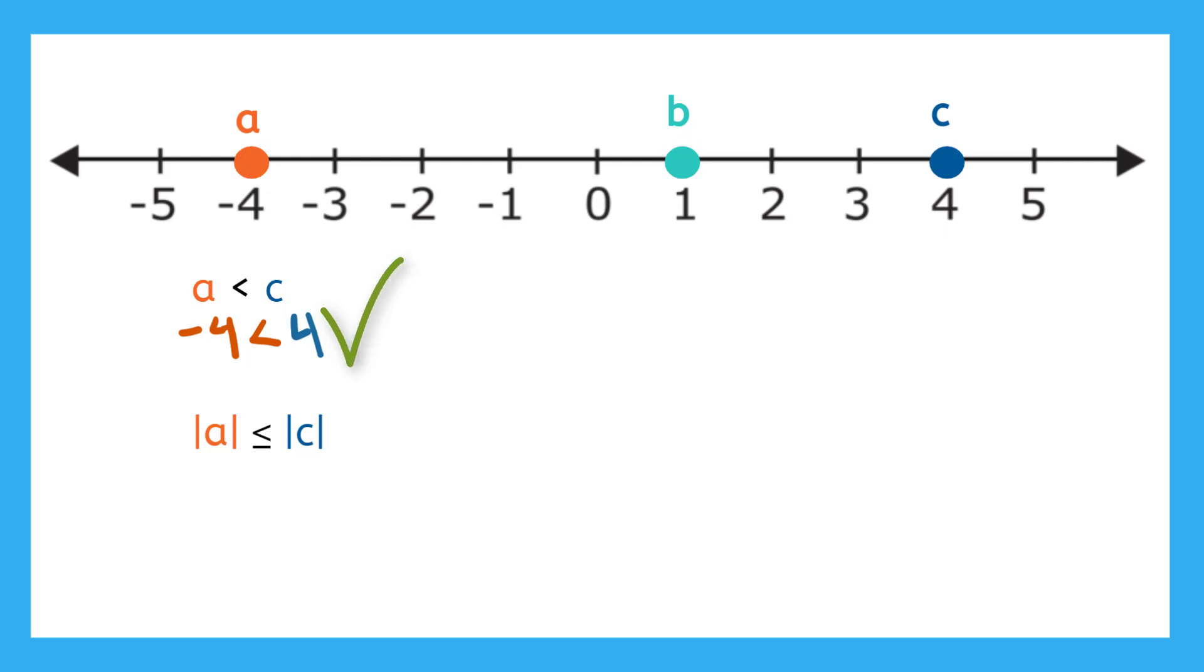Remember, we knew that A was negative four. So I'm going to have less than or equal to, and now what was my C? Yeah, my C was four. So I'll have positive four in here. And then I need to solve for my absolute values.